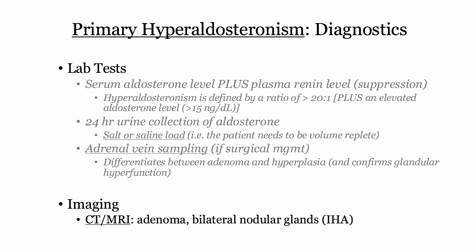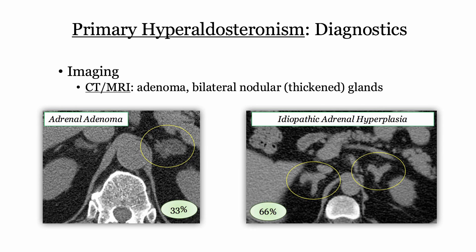Adrenal vein sampling is generally pursued to confirm glandular hyperfunction when surgical management is being considered. If hypersecretion of aldosterone is confirmed, imaging is pursued, including either CT or MRI. The differential diagnosis is adenoma versus idiopathic adrenal hyperplasia. Historically adenoma was seen more commonly, but with increased awareness and testing, adrenal hyperplasia is now reported more commonly.